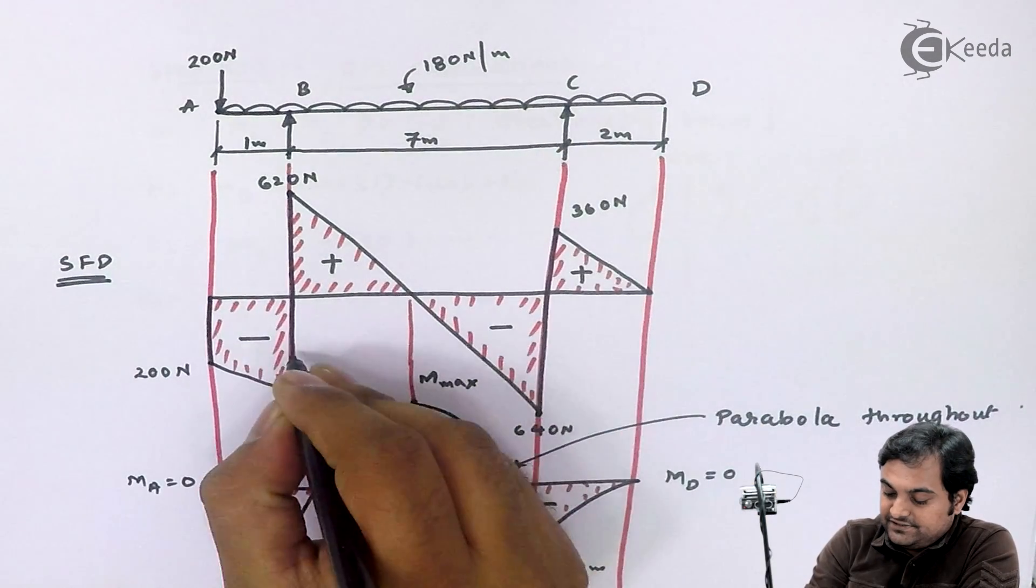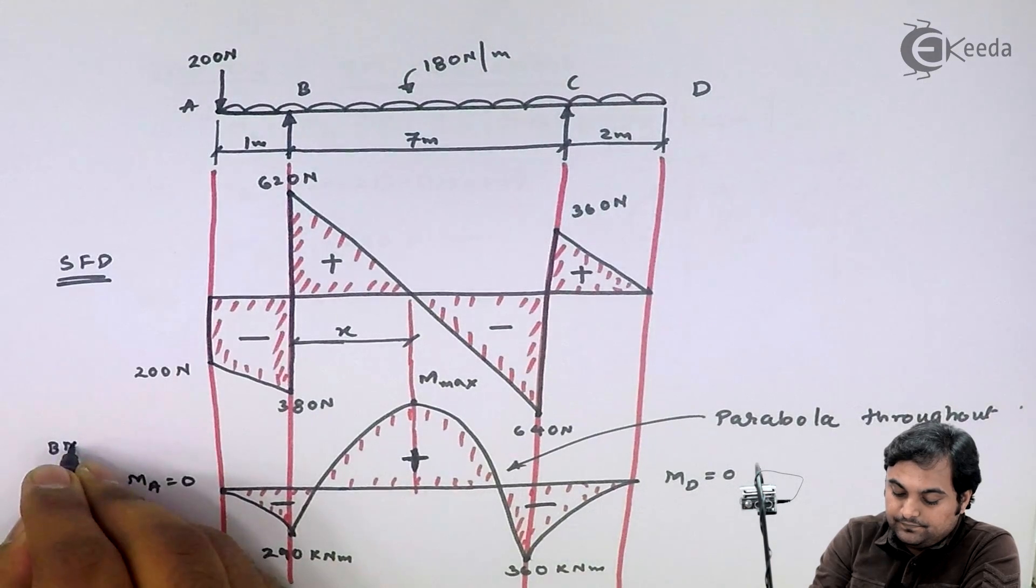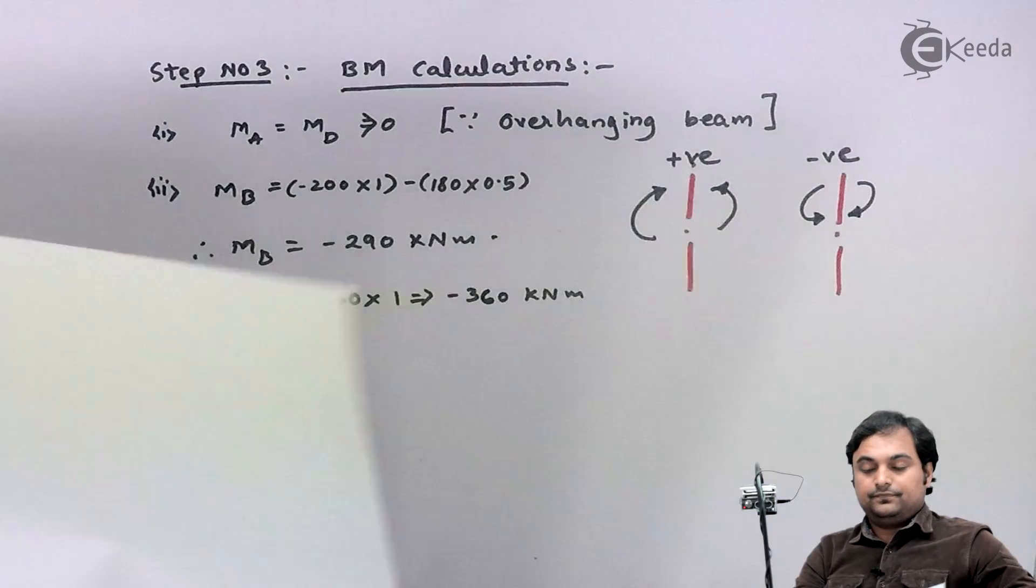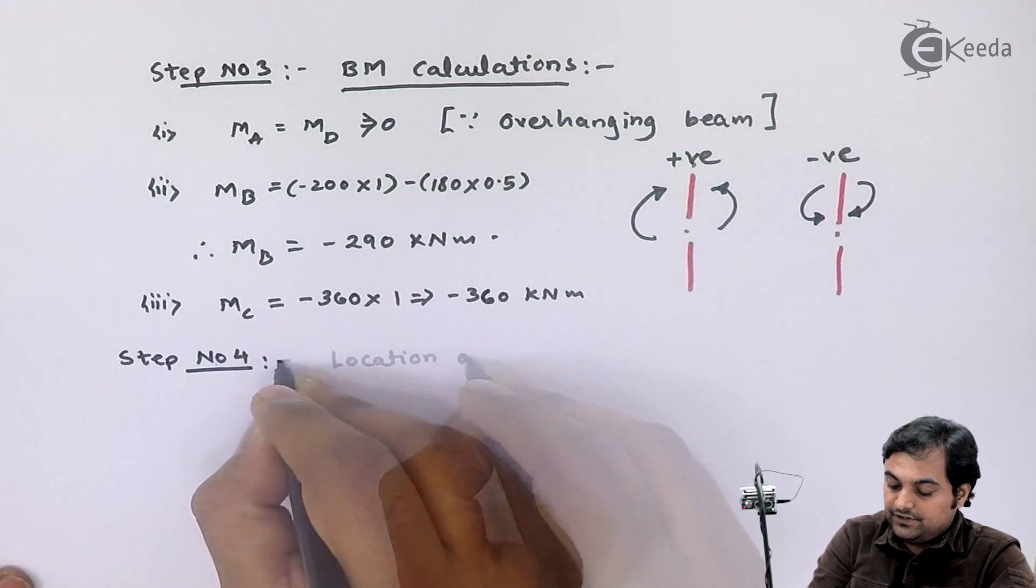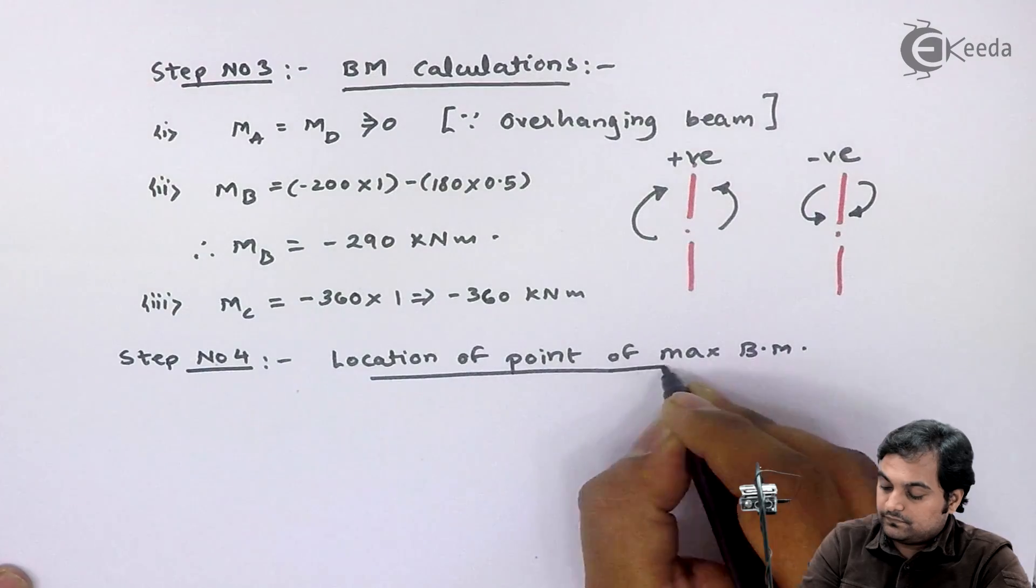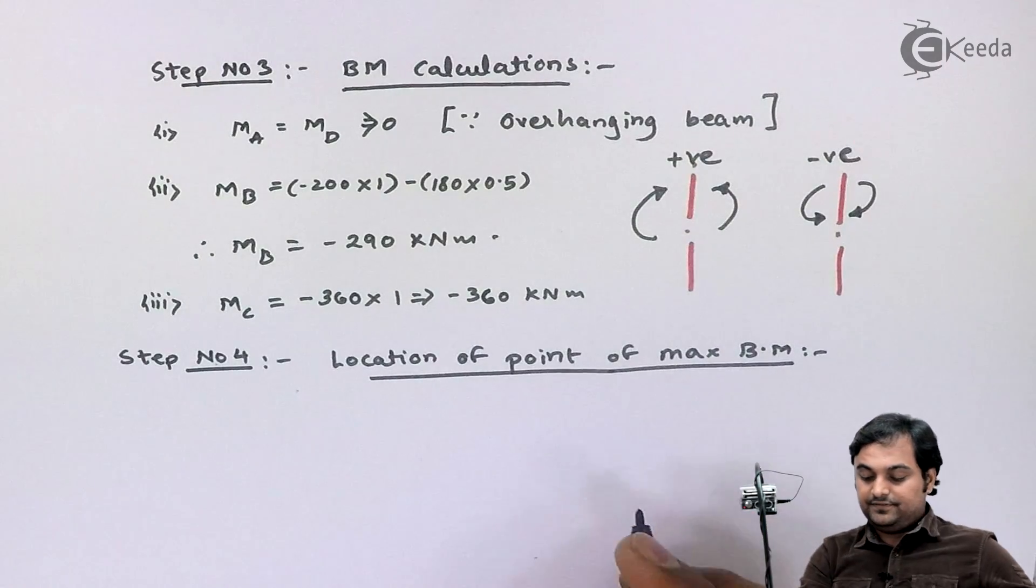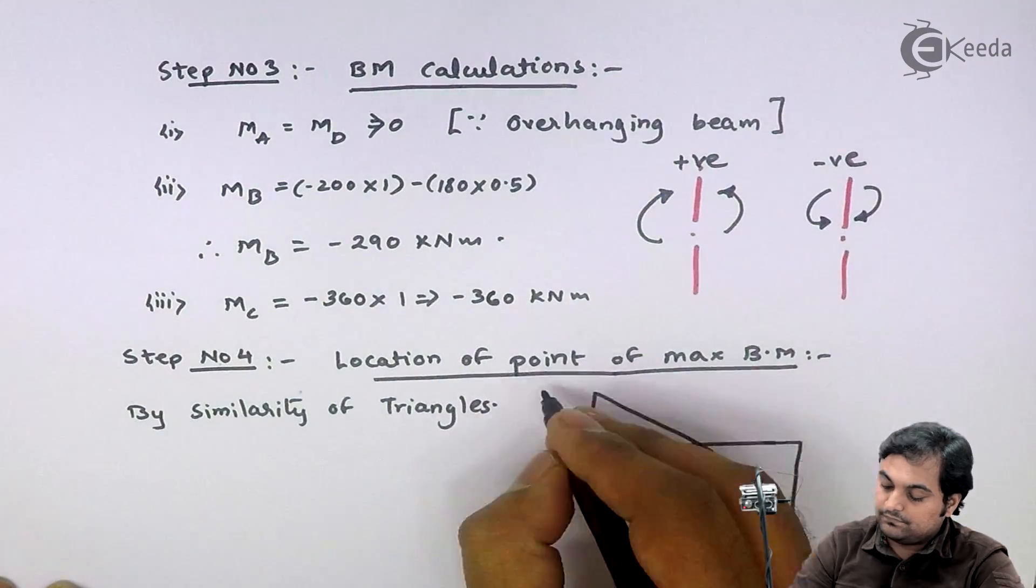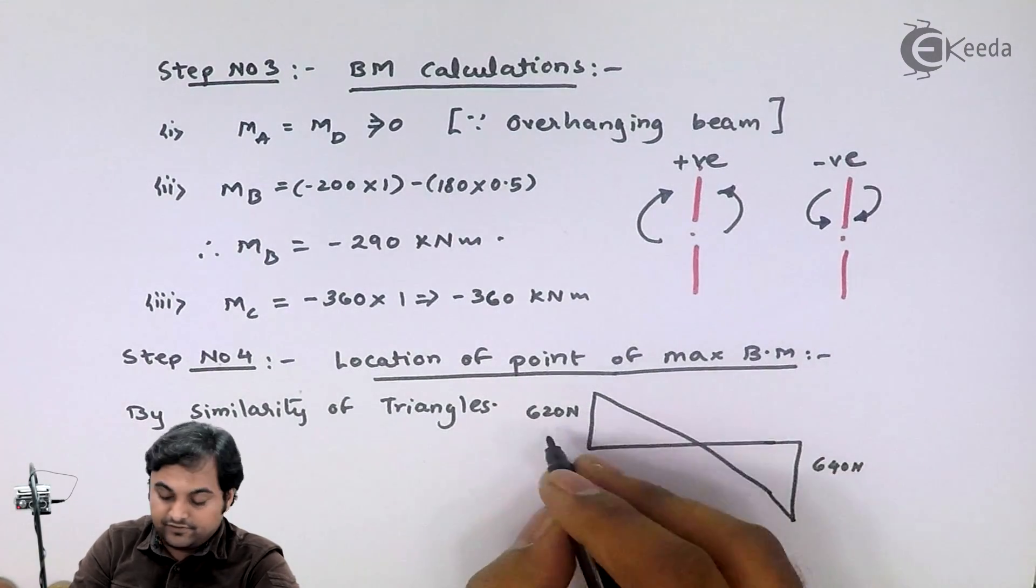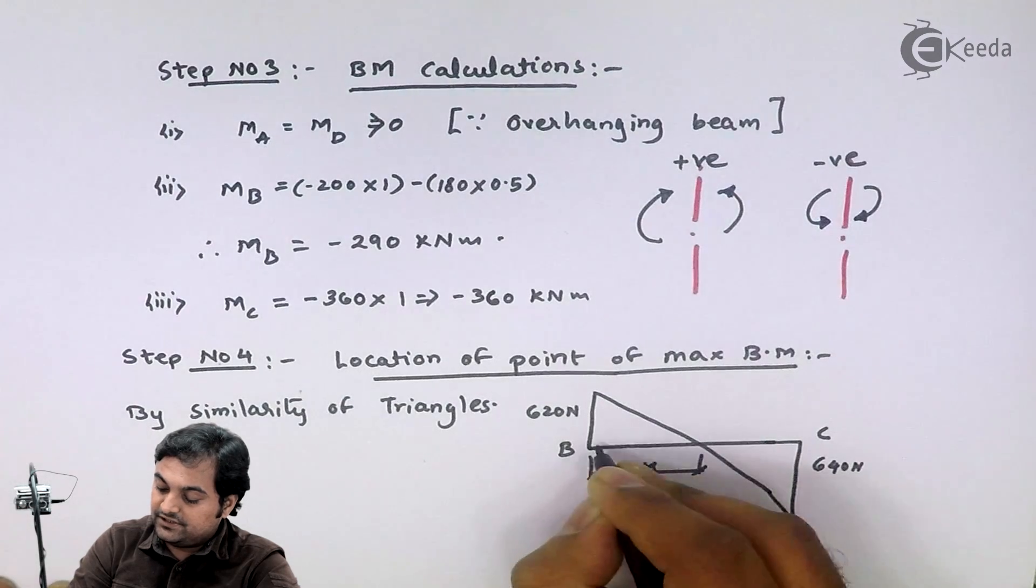I'll take this distance as X, which is X distance from point B. My step number 4 is location of point of maximum bending moment. I can say that from these two triangles, by similarity of triangles, 620 Newton here and I have 640 Newton.